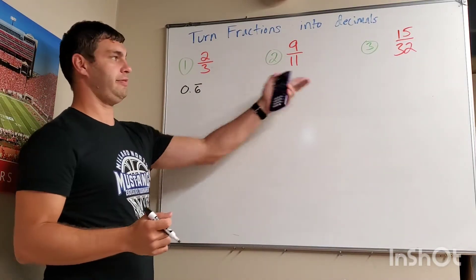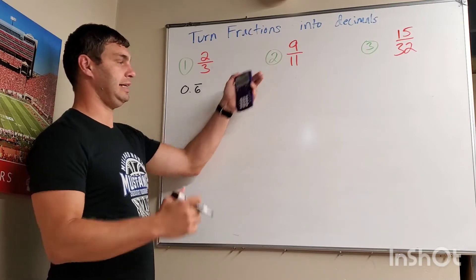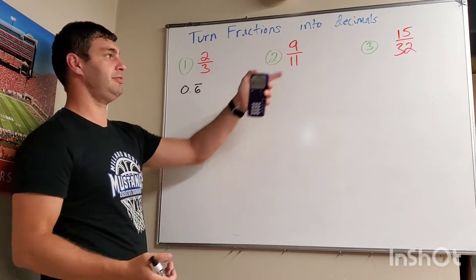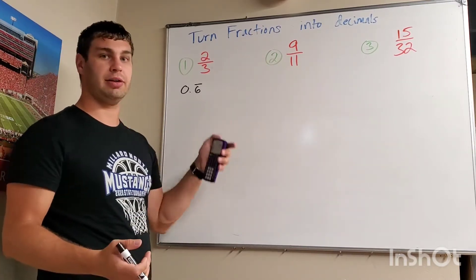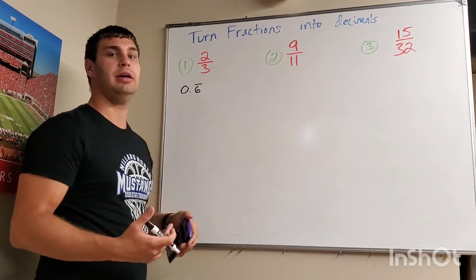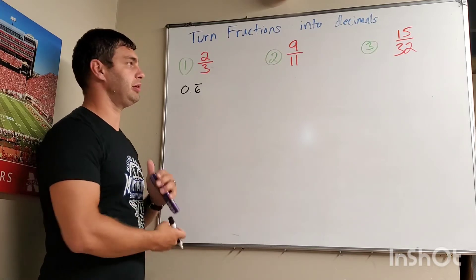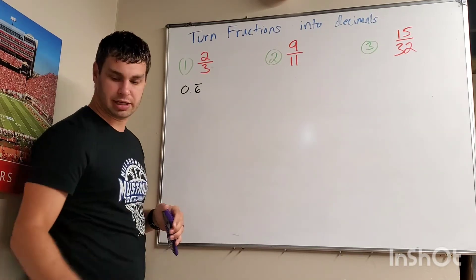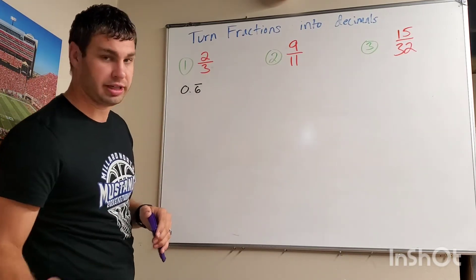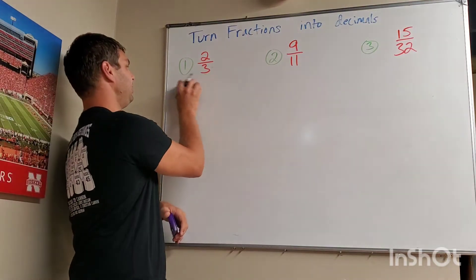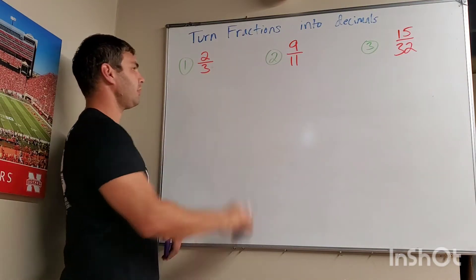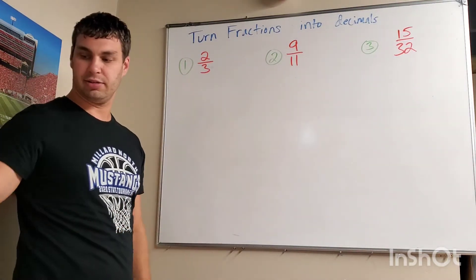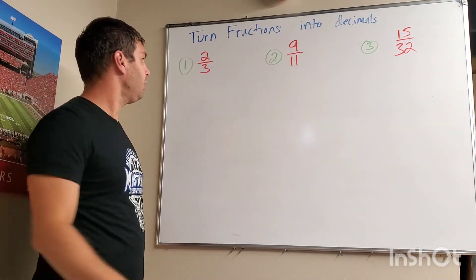I can figure out the other two as well, just by doing 9 divided by 11, and 15 divided by 32, and that would give me the decimals appropriate for those. However, we're going to try to do a little bit longhand today, see if we get the same things. I'm going to put my calculator away and let's try it.